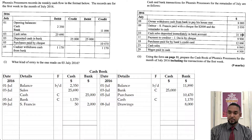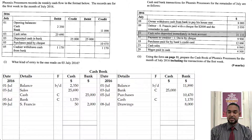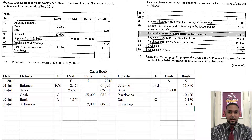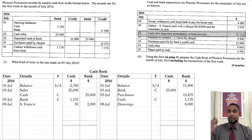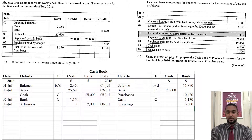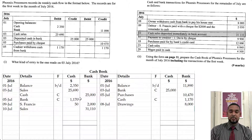So this one — cash sales deposited immediately in bank account. Basically, it's like if someone paid with their debit card: they swipe the card and the money is transferred from the buyer's bank account to the seller's bank account. So under the bank column on the debit side, you're going to see $31,110 and you're going to see it came from sales.